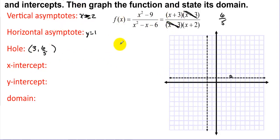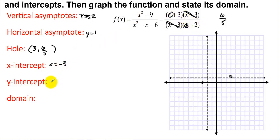The x-intercept is where the remaining numerator equals zero: x = -3. For the y-intercept, plug in x = 0 to get 3/2 = 1.5. So we have x-intercept at (-3, 0) and y-intercept at (0, 3/2).